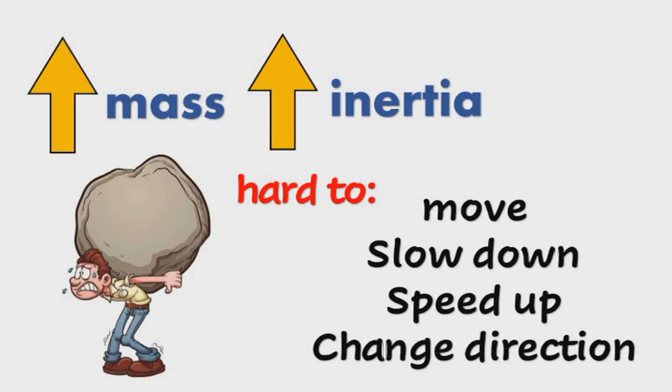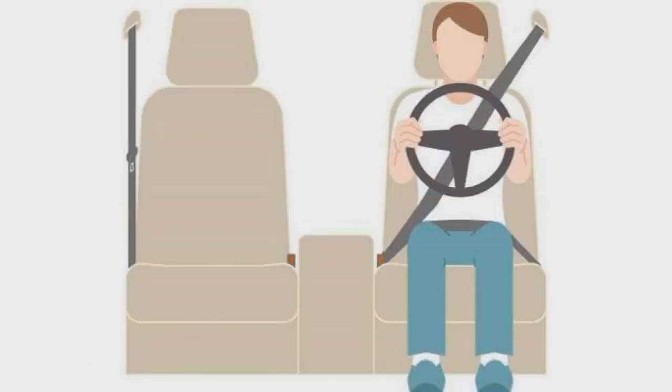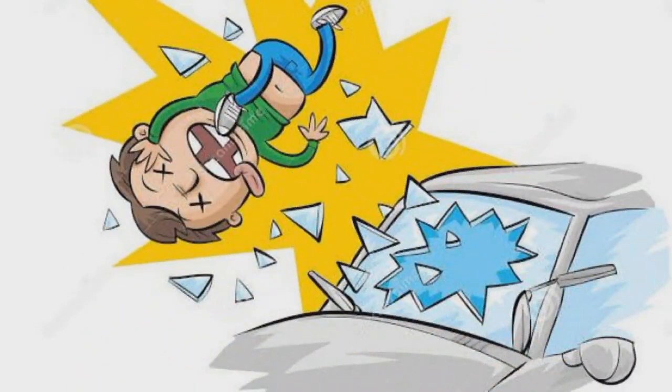Inertia is exhibited when the body moves forward as if it continues to move. This is the reason why drivers need to buckle up their seatbelt to prevent them from moving forward in case there is a sudden stop or bump.